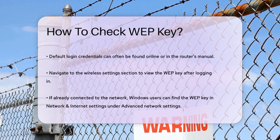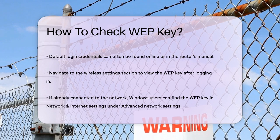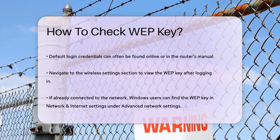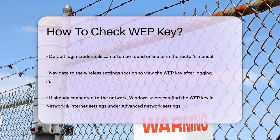If you're using a device that's already connected to the network, you can also find the WEP key through your device's settings. On Windows 10 or 11, go to Settings, then Network and Internet, and select Advanced Network Settings. Find your wireless network, go to its properties, and in the Security tab, check the box to show characters, and you'll see your network security key.